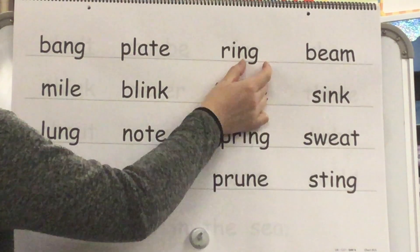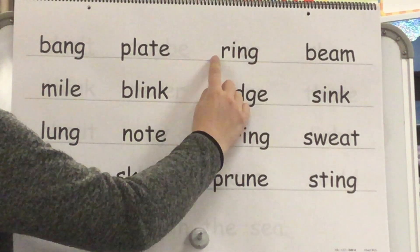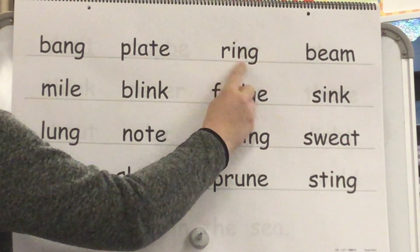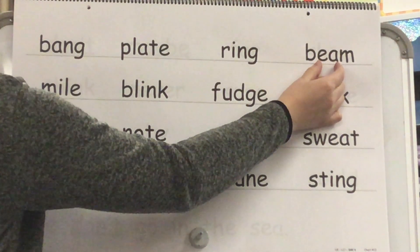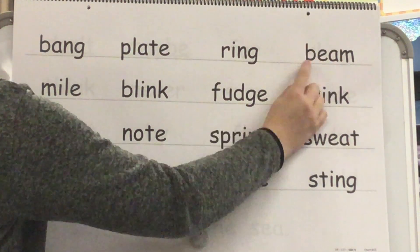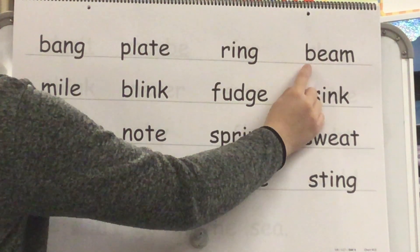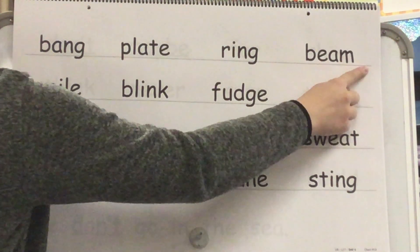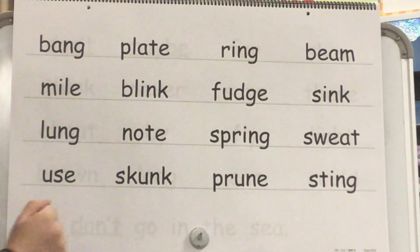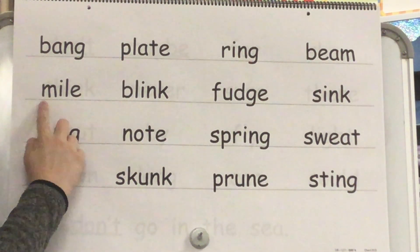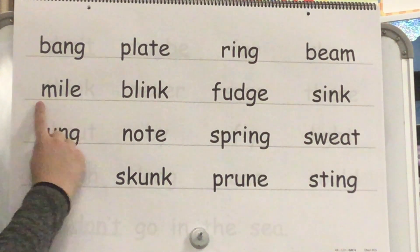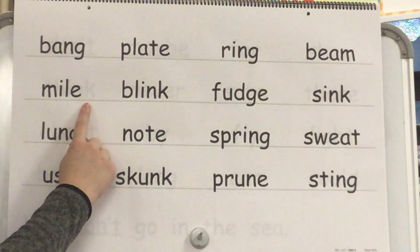Sound? I. Sound? Nk. Blend? R-ing. Word? Ring. Sound? E. Blend? B-eem. Word? Beam. Yes, beam. Sound? I. Blend? Mile. Word? Mile. Yes, mile.